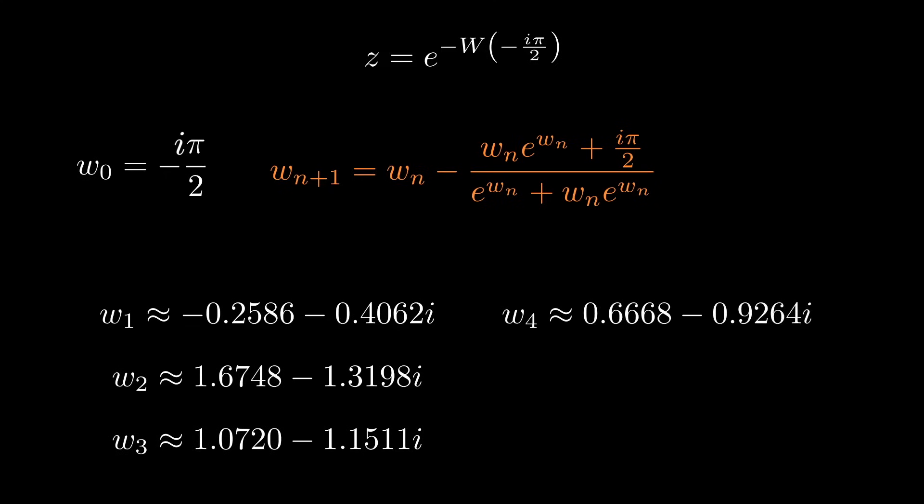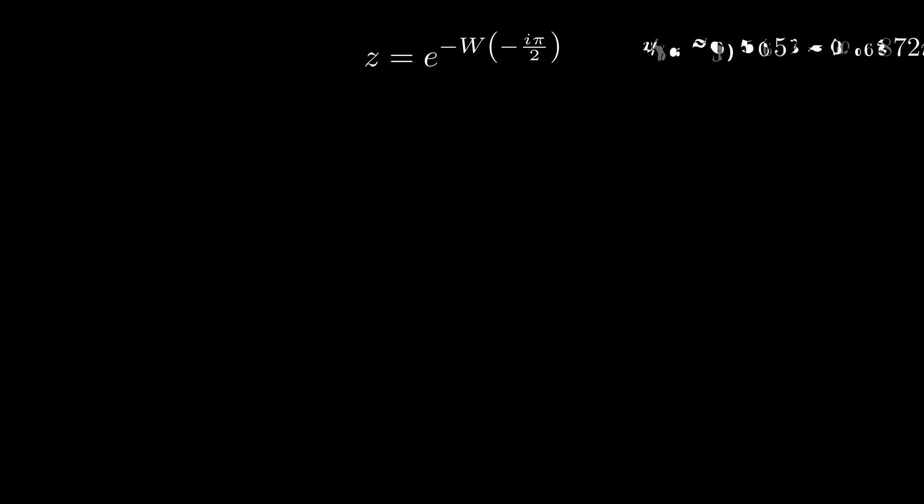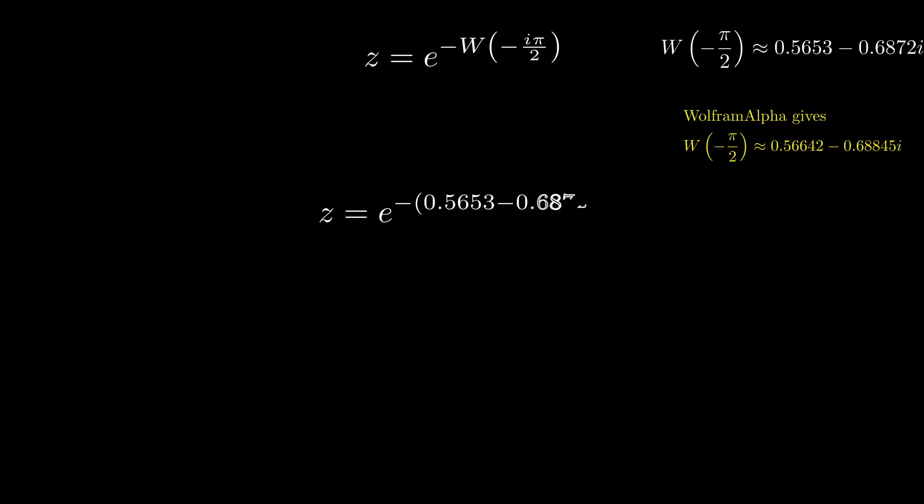And for me in this case, about five or six iterations, and this made me happy. And we're finally in a place where we can answer this question because the value we got for W of minus i pi over 2, we can just substitute back into that exponential and have our answer.